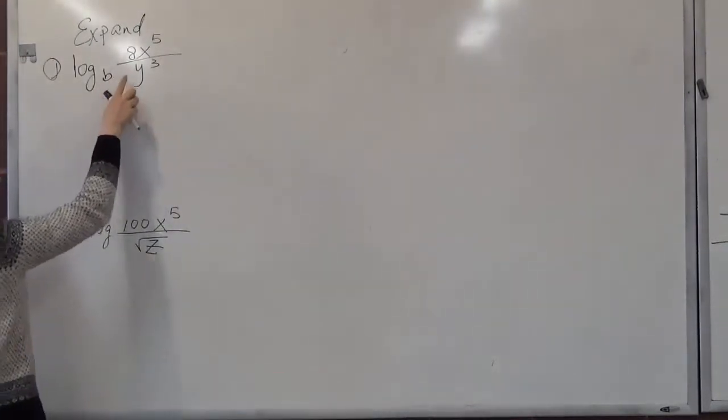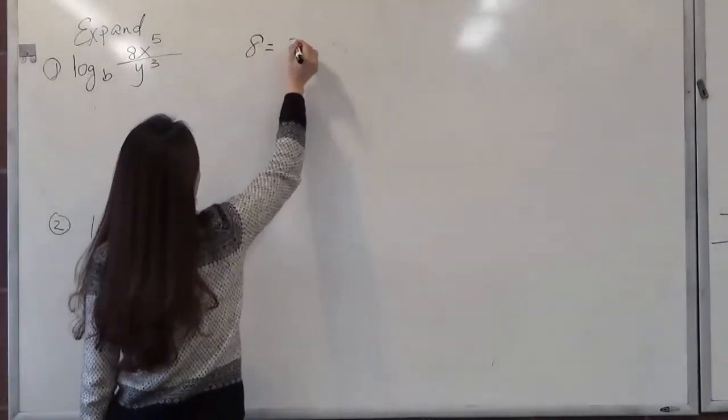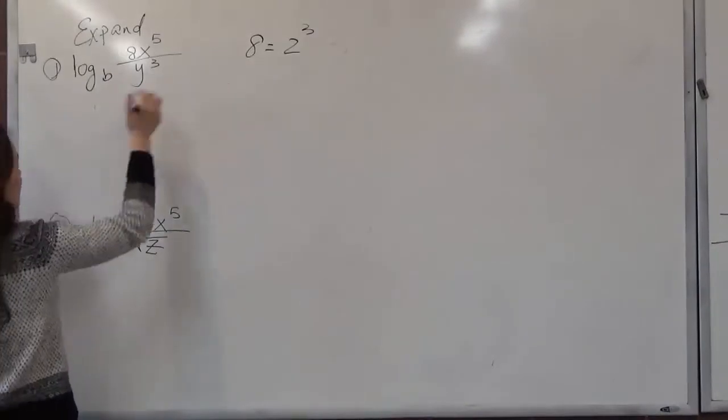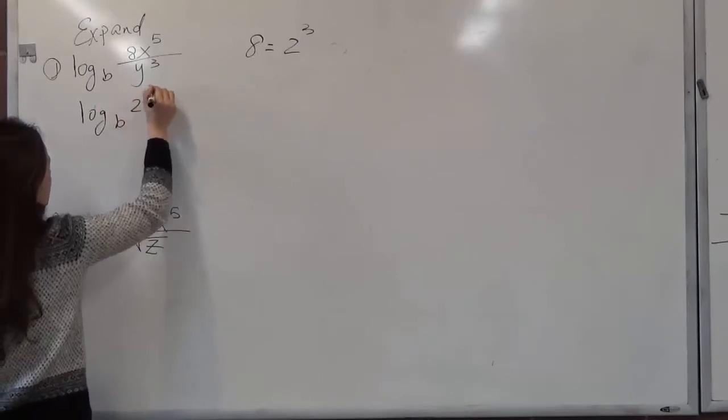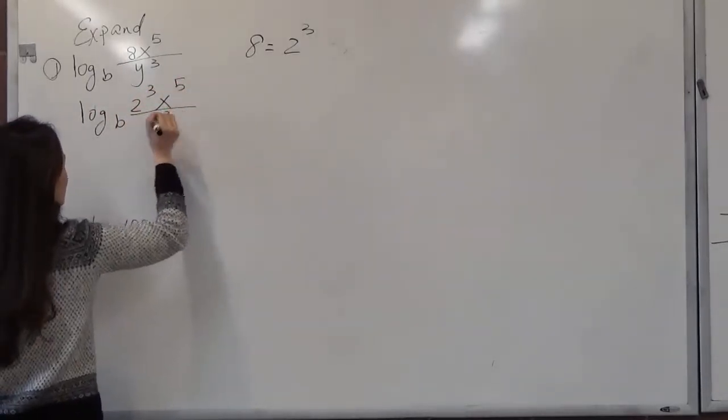First start with the number a. We know a equals 2 to the 3 power. So let's use that. We write log b, 2 to the 3 power x to the fifth power over y to the cube.